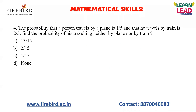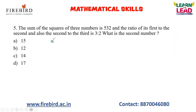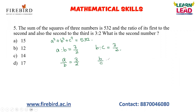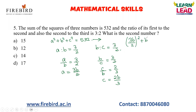The sum of squares of three numbers is 532. So a² + b² + c² = 532. The ratio of the first to second number is a:b = 3:2, and b:c = 3:2. They ask for the second number. From a:b = 3:2, we get a = 3b/2. From b:c = 3:2, we get c = 2b/3. Substituting into the first equation: (3b/2)² + b² + (2b/3)² = 532.